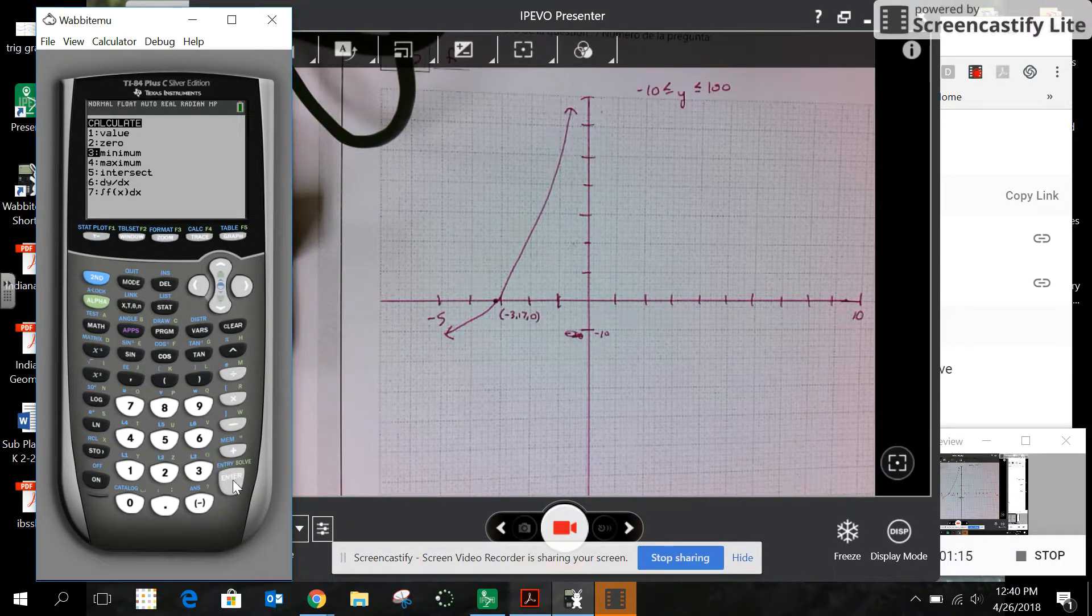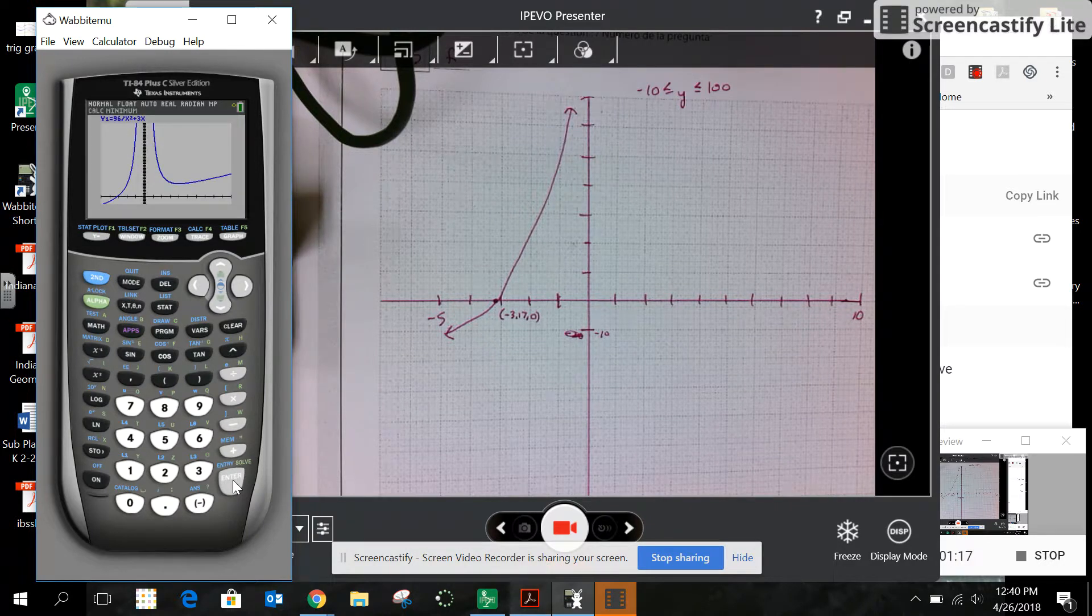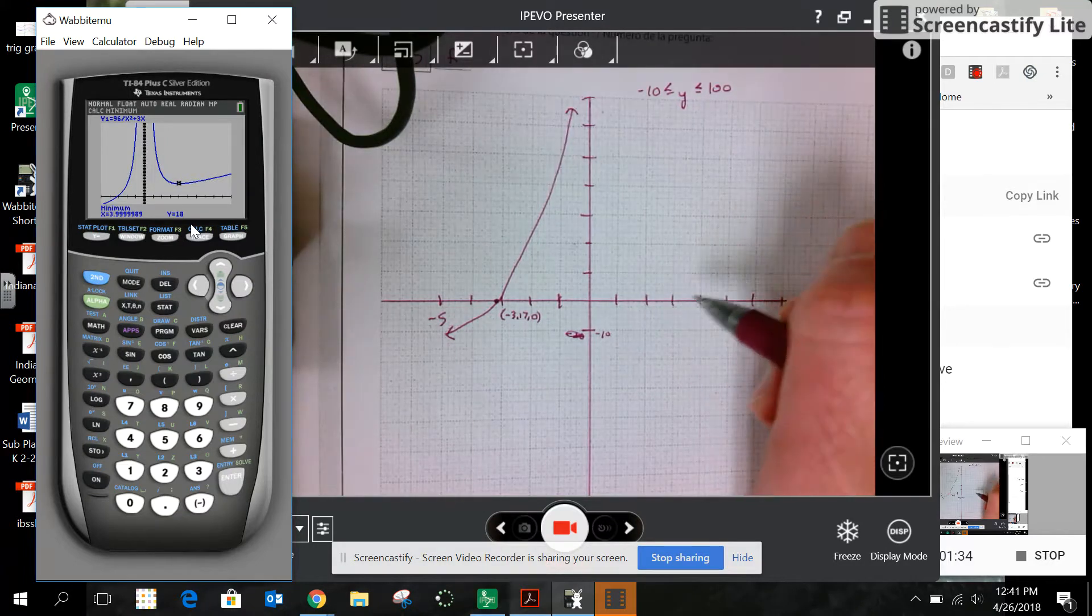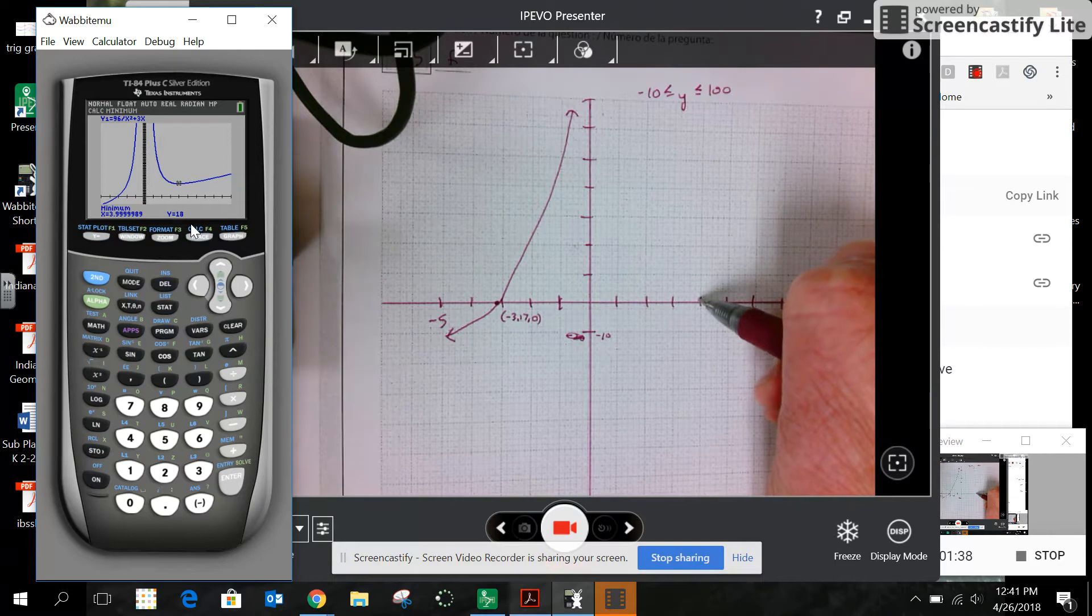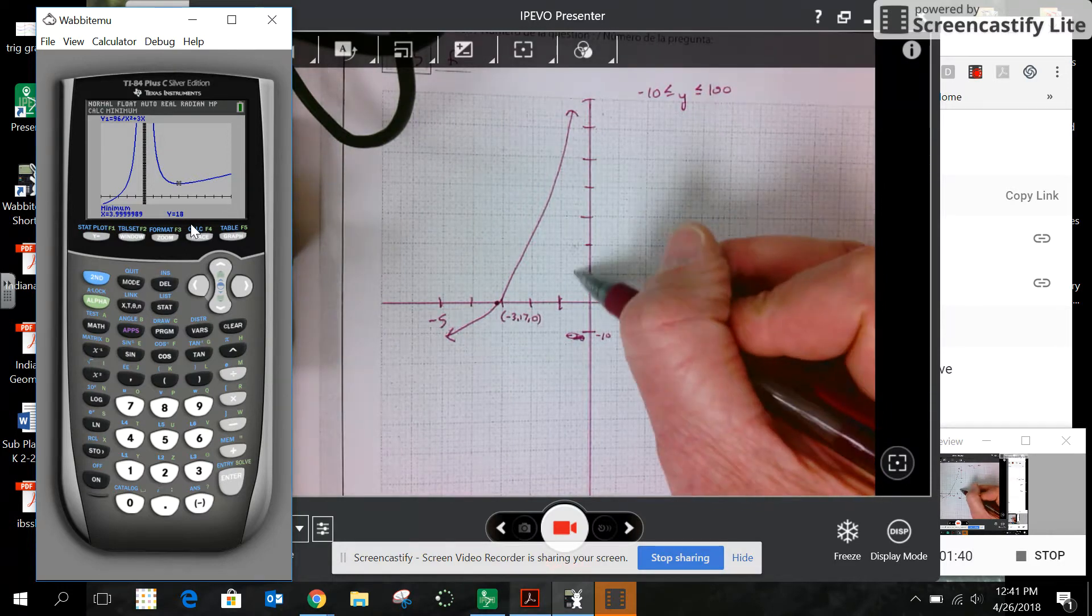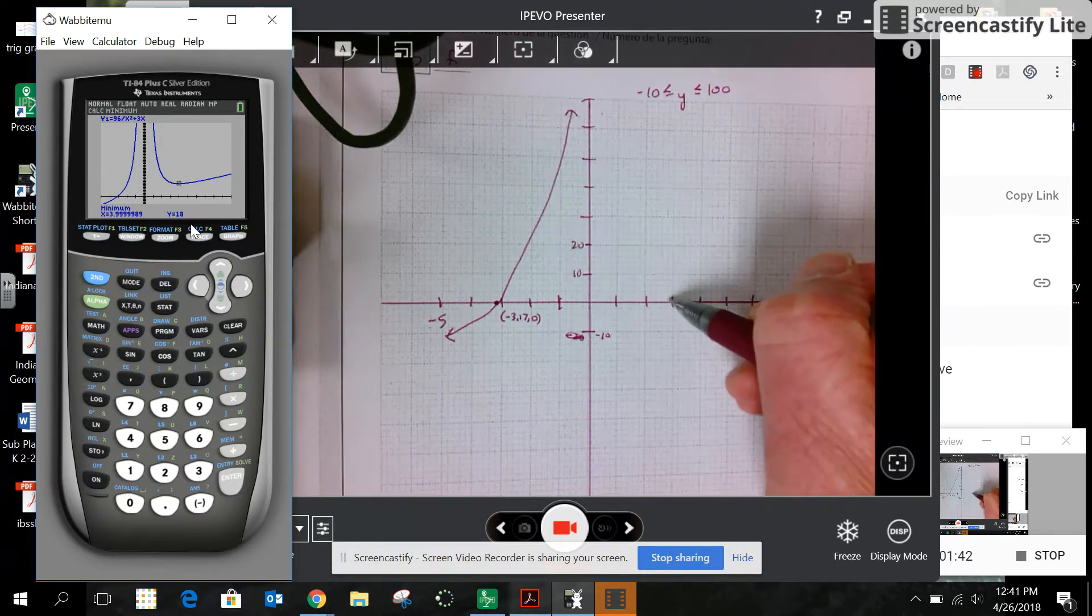I want to calculate the minimum. I know it's at x equals 4. I want to find the y value, so I know I'm gonna enter like 3 and 5. I know it's here, 4, 18.